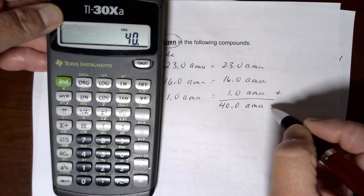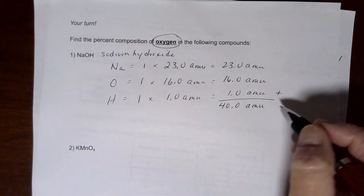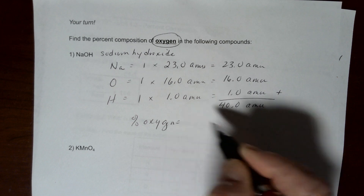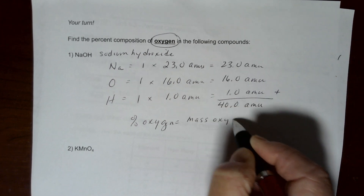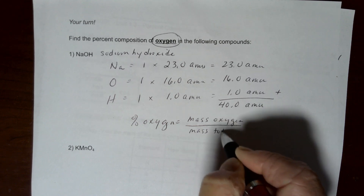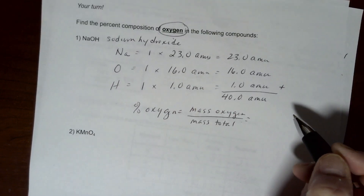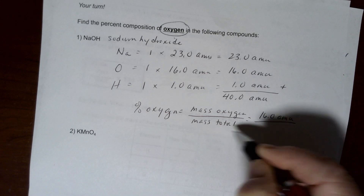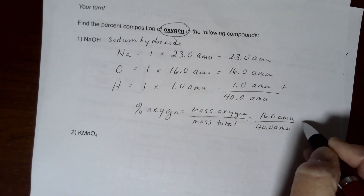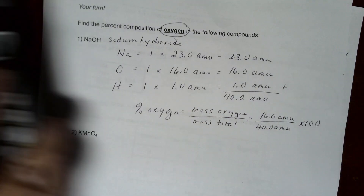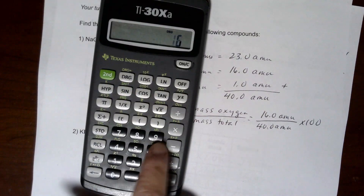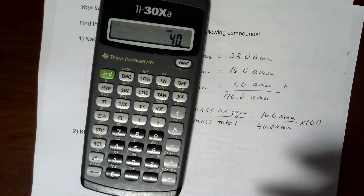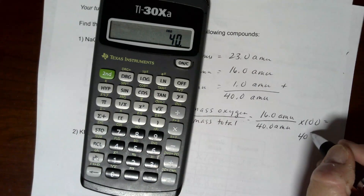All of these numbers were to the nearest tenth, so we maintain that level. This is not the end of the problem — we now find the percent oxygen, which is the mass of oxygen over the mass of the total. Substituting in: 16.0 amu divided by 40.0 amu, multiplied by 100. Our calculator gives us 16 divided by 40 times 100, which equals 40 percent oxygen.